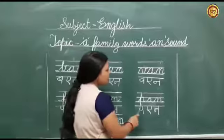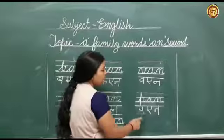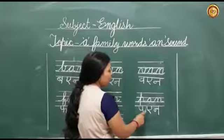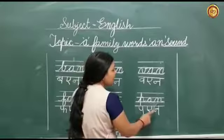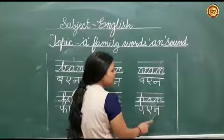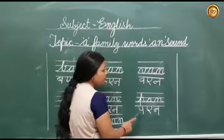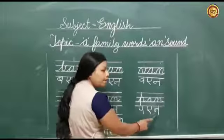This is letter P. The sound of P is 'puh'. This is letter A. The sound of A is 'A'. This is letter N. The sound of N is 'N'. So we can read it like this: puh, A, N — PAN.